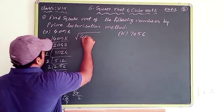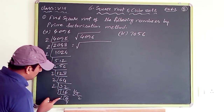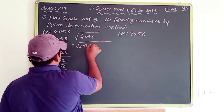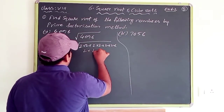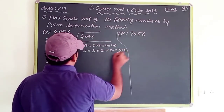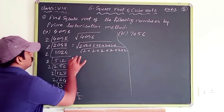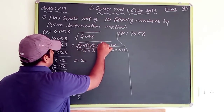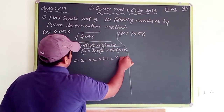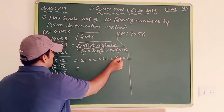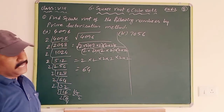For the square root of 4096: we have 2 appearing 12 times, so we form 6 pairs of 2s. From each pair take one 2: 2×2×2×2×2×2 = 64. So the square root of 4096 is 64. You can verify: 64×64 = 4096.